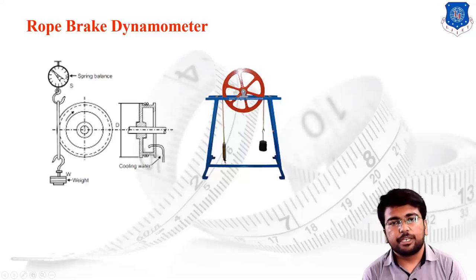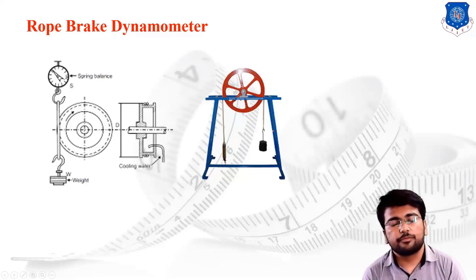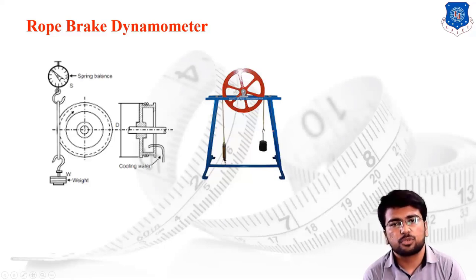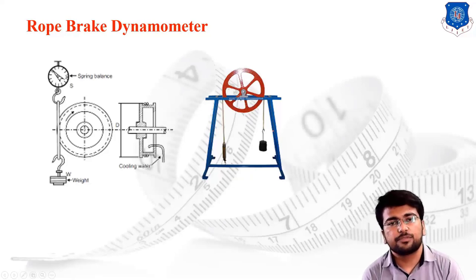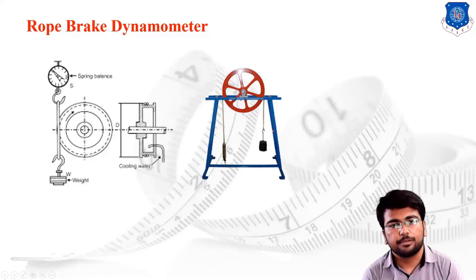The rope brake dynamometer is highly useful for measuring engine shaft power in the laboratory. If we need to find the power available at the end of a four-stroke or four-cylinder engine, we use a rope brake dynamometer. It is widely used in the automobile industries for the measurement of power.